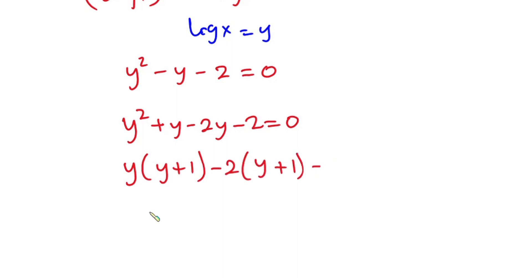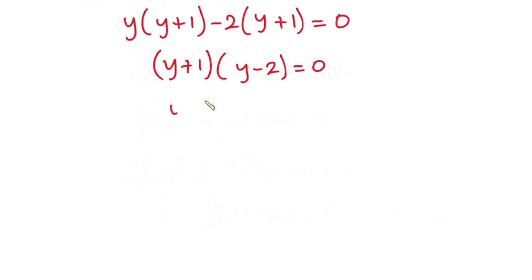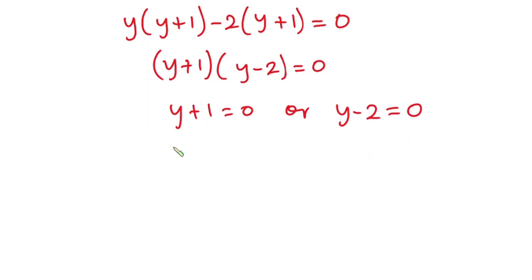We have y here and y here so I can factor y out: y times (y plus one), then factor negative two out to get negative two times (y plus one), and this equals zero. So the factors are (y plus one) and (y minus two). Therefore y plus one equals zero or y minus two equals zero, giving y equals negative one or y equals two.